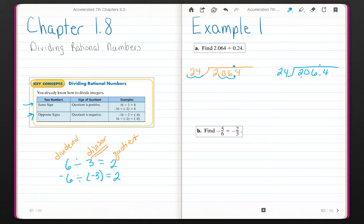24 does not go into 2, does not go into 20. How many times does it go into 206? It goes in 8 times. 8 times 4 is 32. 8 times 2 is 16, 17, 18, 19. Go to subtract. 4, 20 minus 19 is 1. I'm going to bring down the 4. 24 goes into 144 six times, and 6 times 24 is 144.